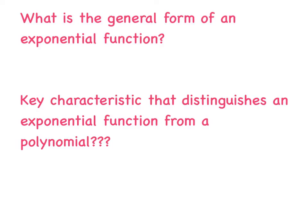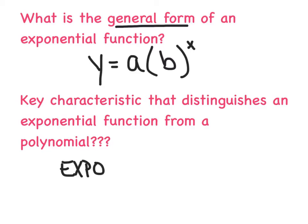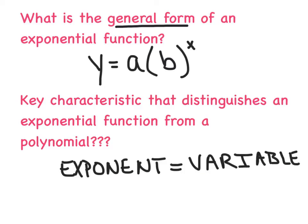So first and foremost, what's the general form of an exponential function? And it comes in the form of y equals a multiplied by b, which is raised to the x power. And that exponent only applies to b. Now, what are the key characteristics that distinguish an exponential function from a polynomial one? And the key here now is that the exponent is now where the variable lives. So the exponent is where the variable lies. And that's how you distinguish the difference between an exponential function versus a polynomial function.